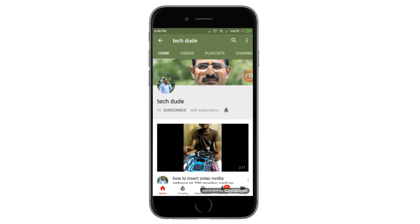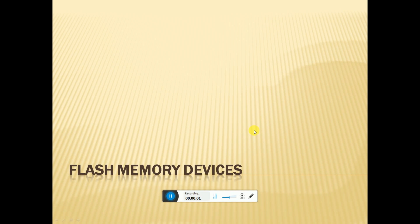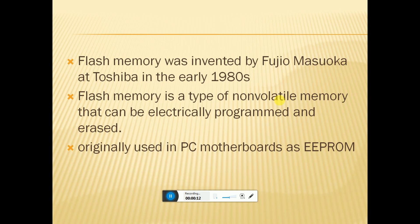Hi guys, welcome to your Tech Door. Today I will explain flash memory devices — what are flash memory devices. Flash memory was invented by Masuoka at Toshiba in the early 1980s. Flash memory is a type of non-volatile memory that can be electrically programmed and erased.